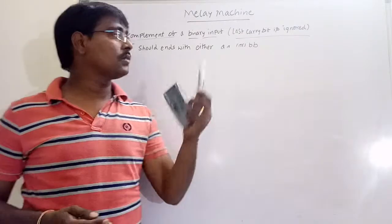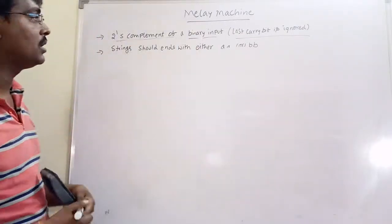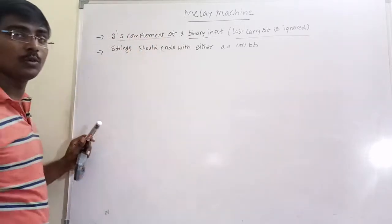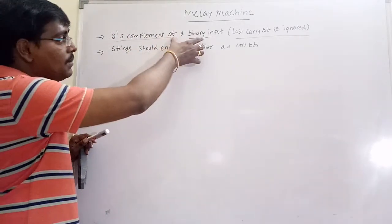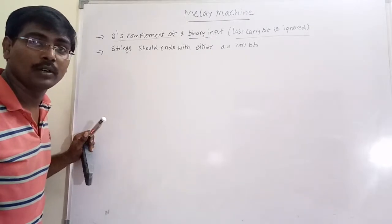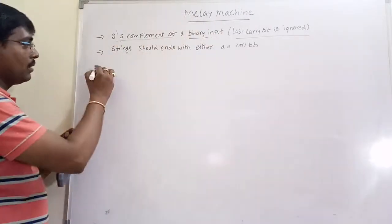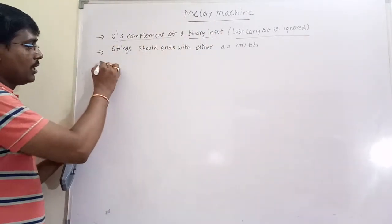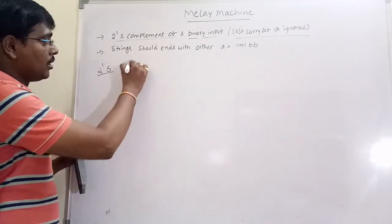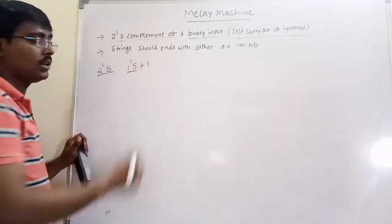Hi friends, in this session we will discuss some more examples of Mealy machines. Our first example is to calculate 2's complement — that is, construct a Mealy machine that produces output as the 2's complement of a given binary number. Everyone knows what the 2's complement of a number is: it is the 1's complement of the number plus 1.